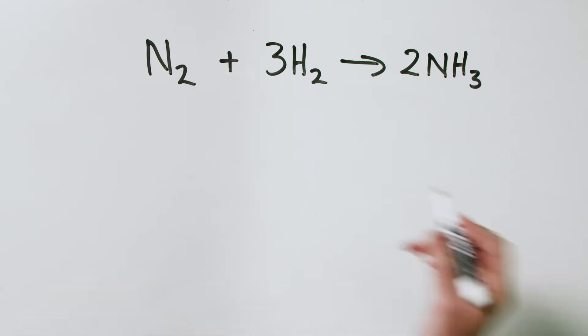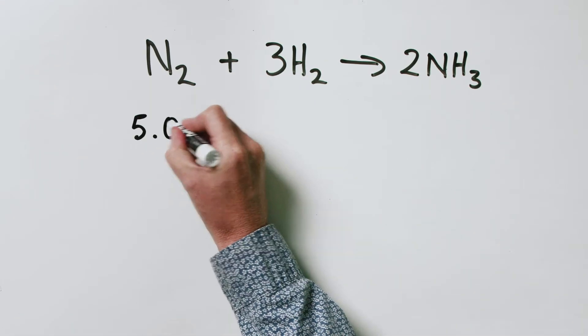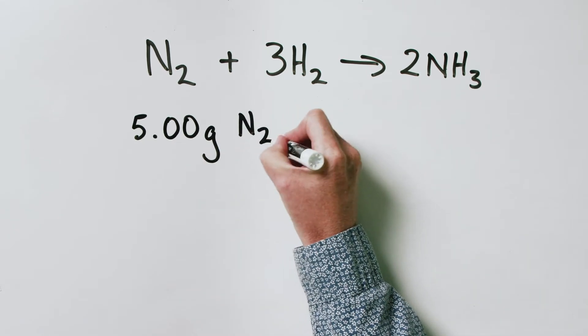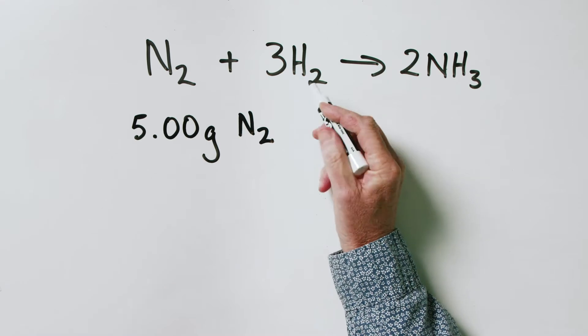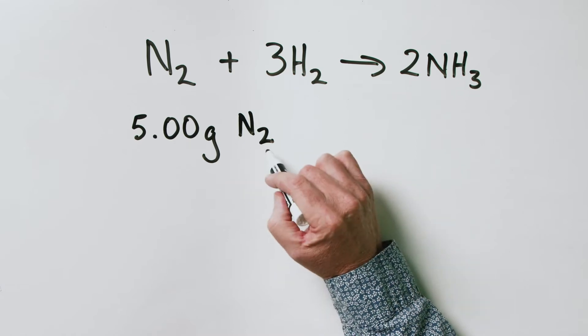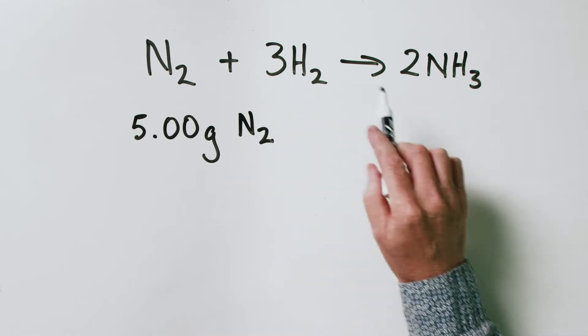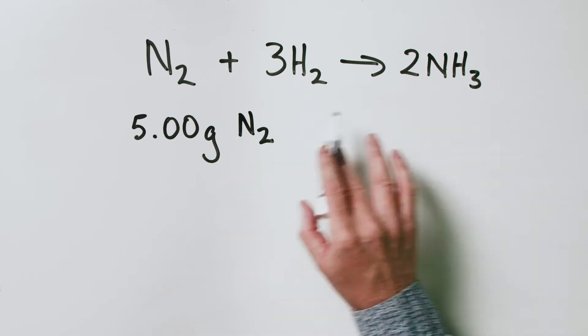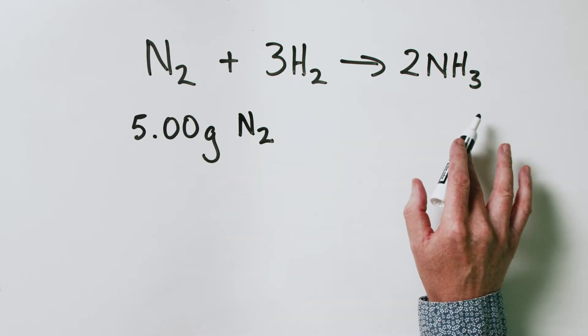So let's start with our balanced chemical equation again. We have 5.00 grams of nitrogen. The question is: what mass of hydrogen is going to be required for this to react completely, and what mass of ammonia are we going to get out, assuming that the reaction goes to completion? This is pretty much a classic example of a stoichiometry problem.